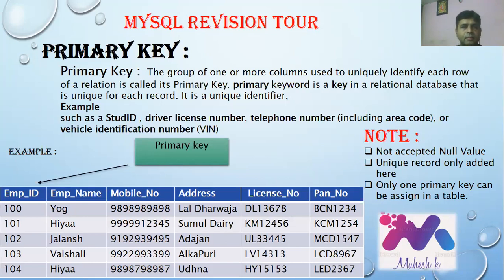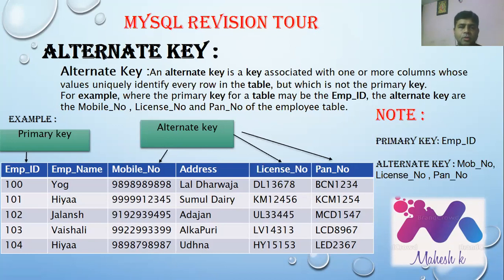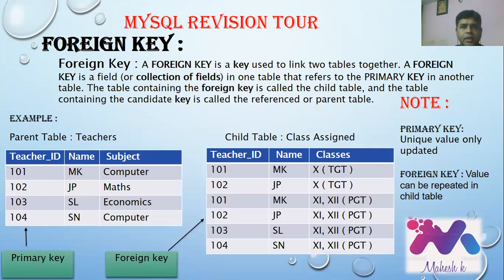Alternate key: an alternate key is associated with one or more columns whose values uniquely identify every row in the table but which is not the primary key. The rest of the candidate keys — excluding the one assigned as primary key — are considered alternate keys. For example, Mobile Number, License Number, and PAN Number are three alternate keys, since Employee ID is assigned as the primary key.